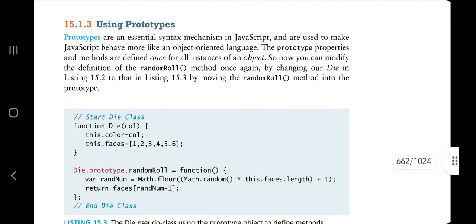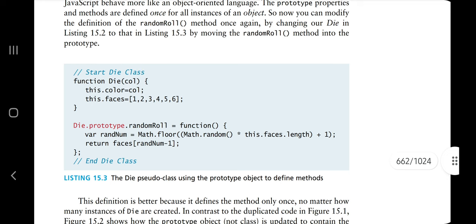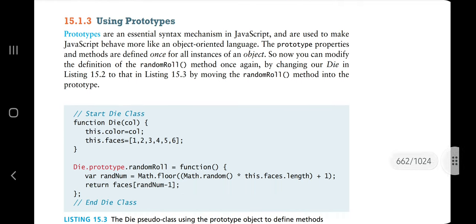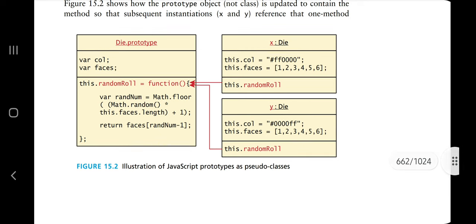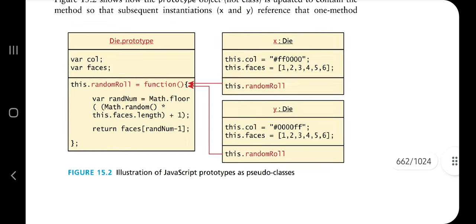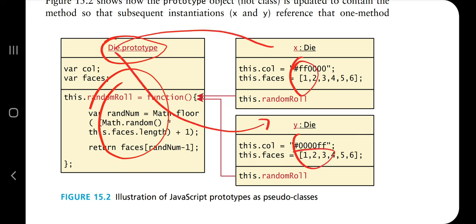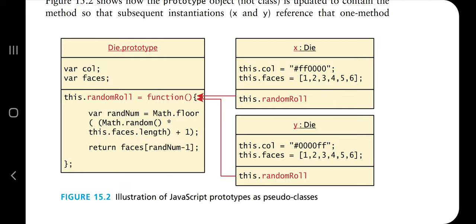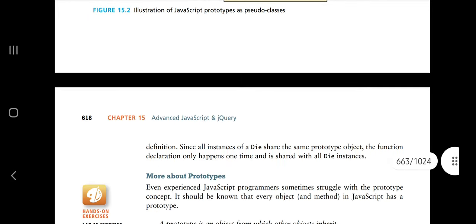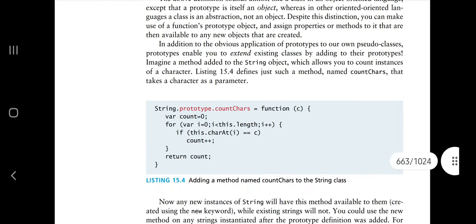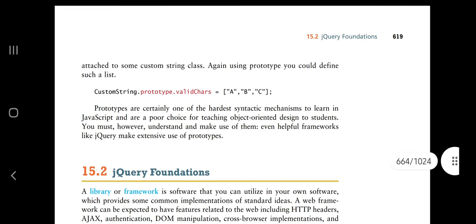Prototypes in JavaScript are the blueprint. If a prototype is defined, by using that object you can create new objects. For example, 'die' is the singular form of 'dice' — you define things here and by using this you can inherit the class and modify the values. That's how prototype-based pseudo classes work.